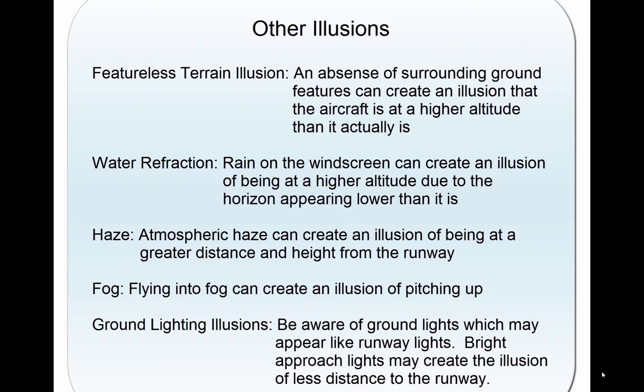Ground lighting illusions. Lights along a straight path, such as a road or lights on moving trains, can be mistaken for runway and approach lights. Bright runway and approach lighting systems, especially where few lights illuminate the surrounding terrain, may create the illusion of less distance to the runway.